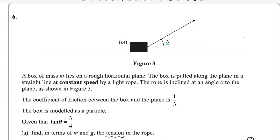We need to find the tension in the rope. The force acting along the string is known as tension, and this tension is making angle theta with the plane. There are very important points in the question. This box is moving with constant speed, which means there is no acceleration — acceleration will be zero. Therefore, the system is in equilibrium. In equilibrium, upward forces equal downward forces, and rightward forces equal leftward forces.